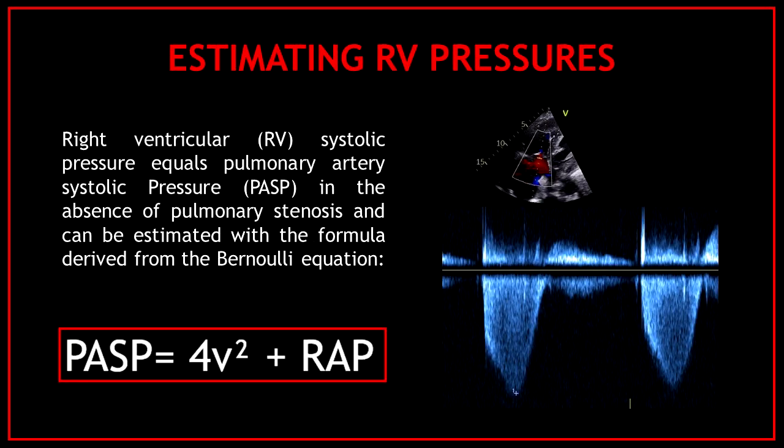The whole purpose of this measurement is estimating the right ventricular pressures. Right ventricular systolic pressure equals pulmonary artery systolic pressure in the absence of pulmonary stenosis, and can be estimated with the formula derived from the Bernoulli equation. To apply this formula you need to obtain the tricuspid regurgitation velocity and add to this an estimation of the right atrial pressure.